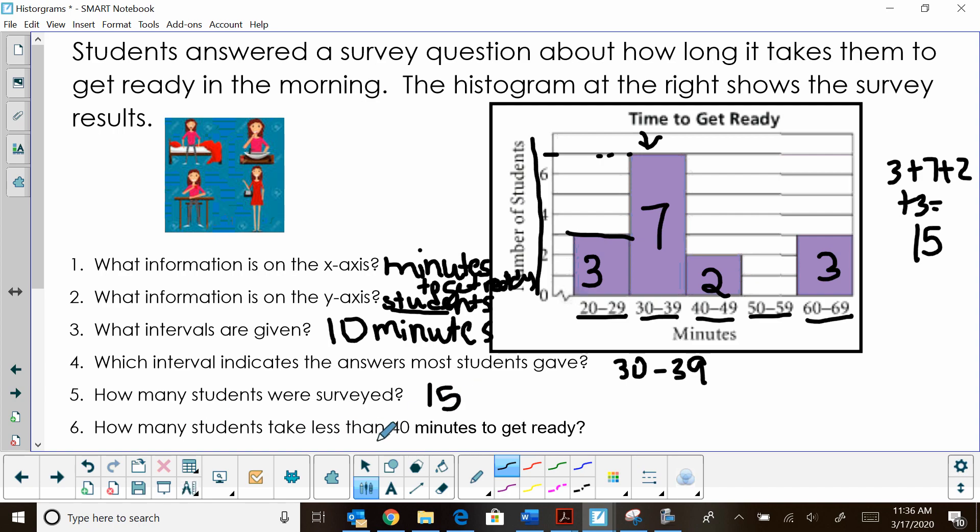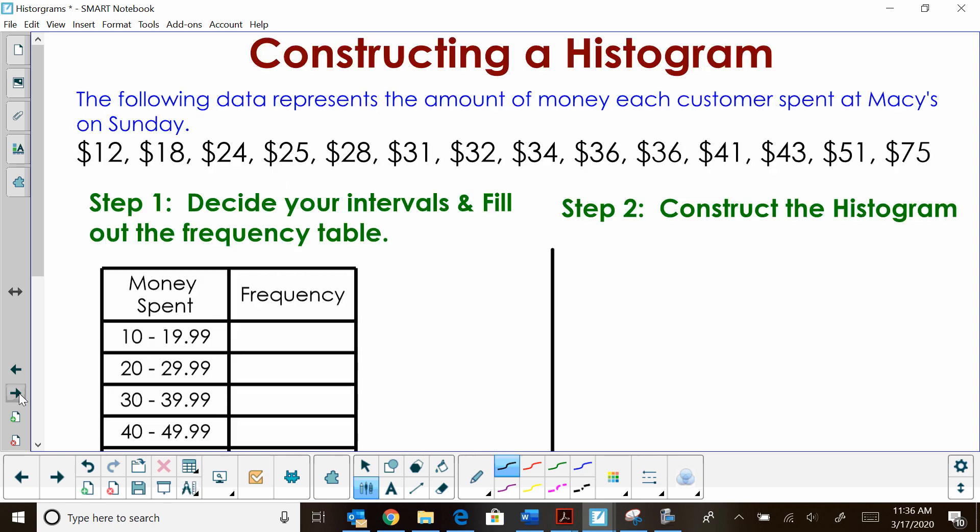Then how many students take less than 40 minutes to get ready? Well, let's just kind of make ourselves a little line here. Everything to the left is less than 40 minutes. So we had 10 students that take less than 40 minutes to get ready. So that's how you interpret a graph, or in this case, a histogram.